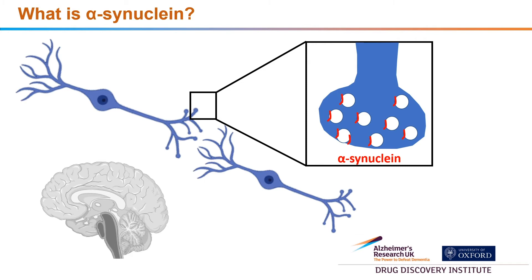However, as we know from the earlier slides, in disease, this alpha-synuclein forms these accumulations. What happens is it goes from a functional soluble state into a highly insoluble aggregated state. If we could understand how that happens, we could understand how the disease occurs.